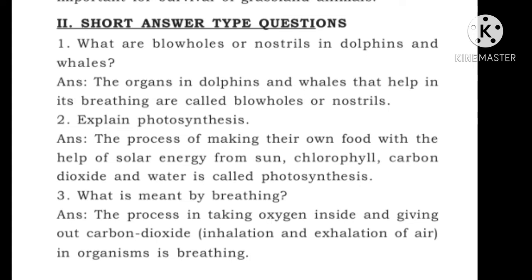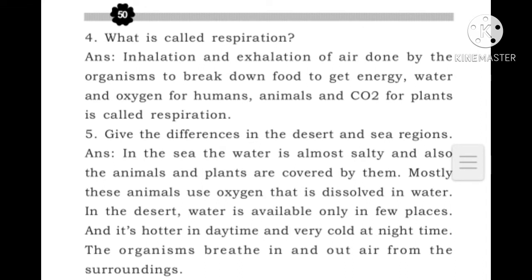Short answers: What are blowholes or nostrils in dolphins and whales? The organs in dolphins and whales that help in breathing are called blowholes or nostrils. Explain photosynthesis: The process of making food with the help of solar energy from the sun, chlorophyll, carbon dioxide and water is called photosynthesis. What is breathing? The process of taking oxygen inside and giving out carbon dioxide — inhalation and exhalation of air in organisms — is breathing. What is respiration? Inhalation and exhalation of air done by organisms to break down food to get energy, water and oxygen for humans and animals, and carbon dioxide for plants, is called respiration.